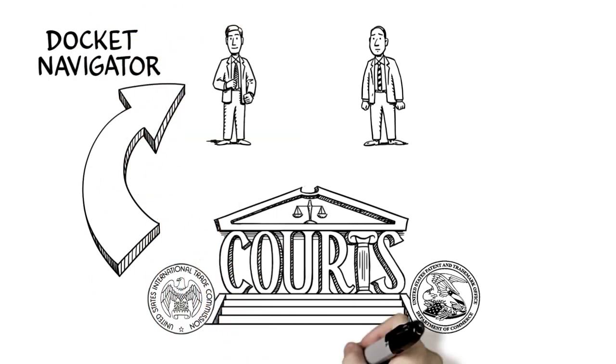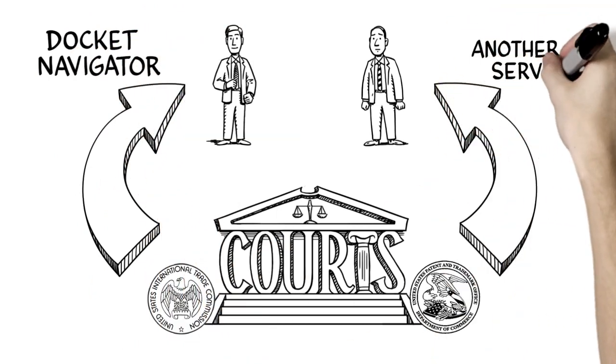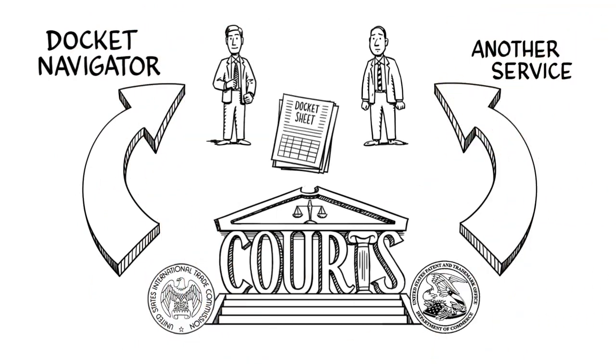John's firm does its research on Docket Navigator. Jim's firm uses another company. They can both search for basic case information and the text of docket sheets.